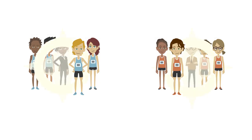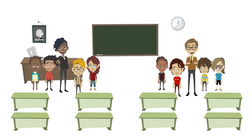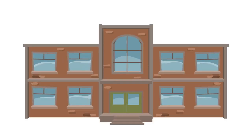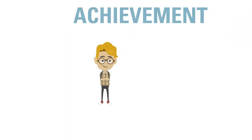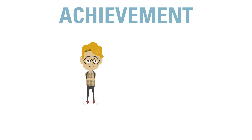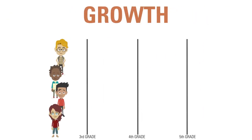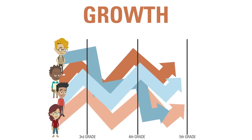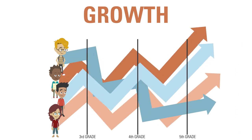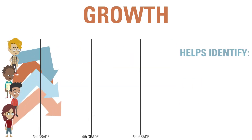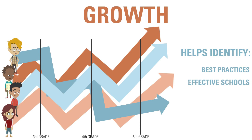These same principles apply to teachers and their classrooms, even whole schools. While achievement data tells us whether students are on track for career or college, measuring growth across a classroom or school over several years allows us to see where students are making the most or least growth compared to where they started. This information can help identify best practices, effective schools, and excellent educators.